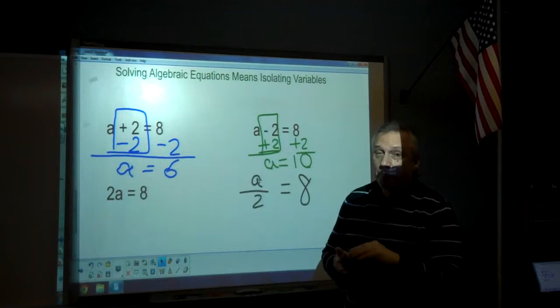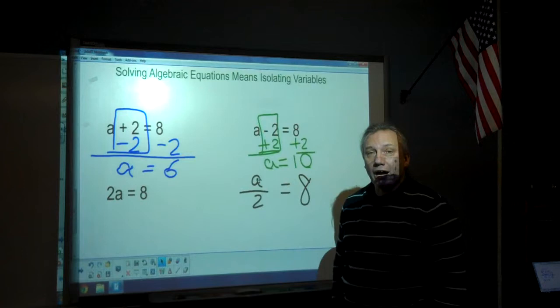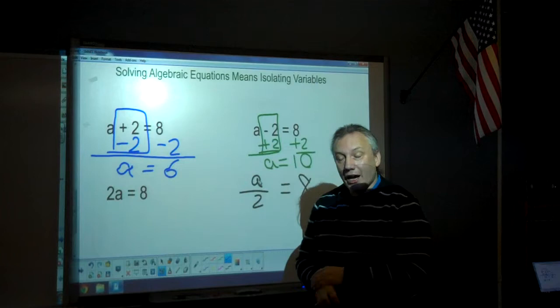In our next example, and I'm giving you all four examples, there are only four things you could have to do to isolate a one-step equation. 2a is equal to 8. 2a means 2 times a. Once you hit pre-algebra, a number in front of a variable is simply multiplication. So what's stopping us from having the isolated a is times 2.